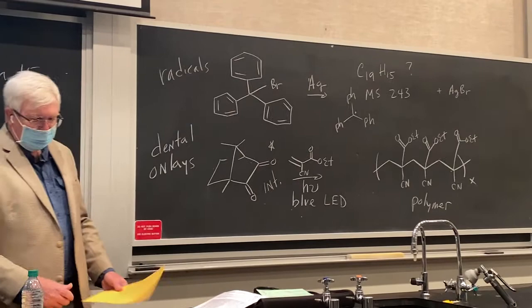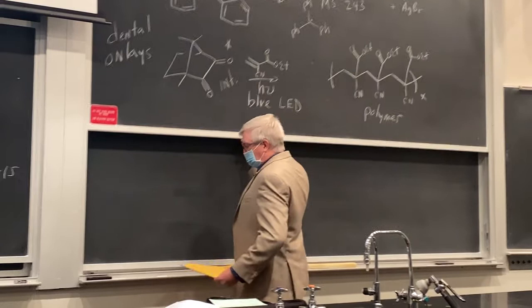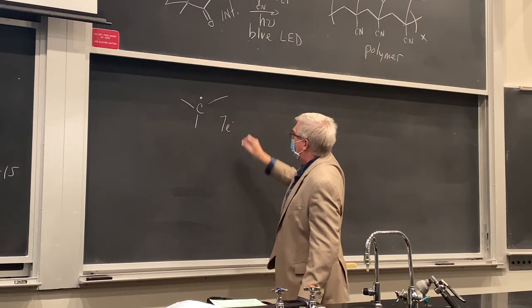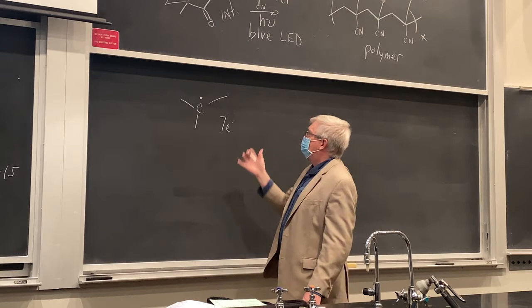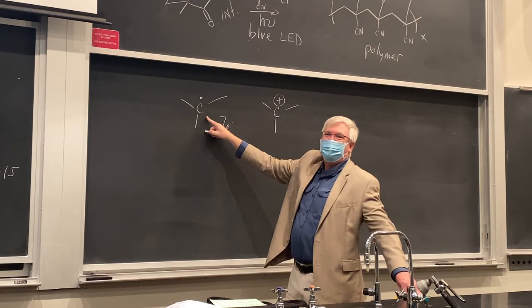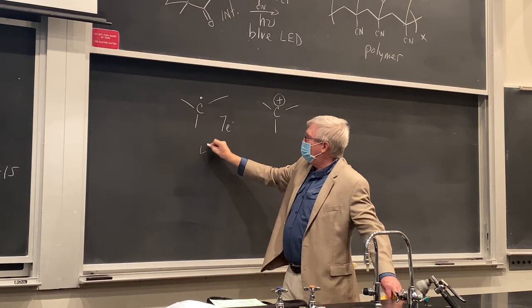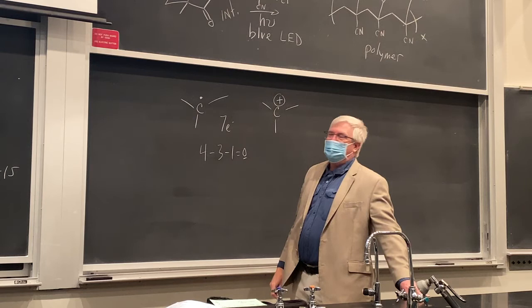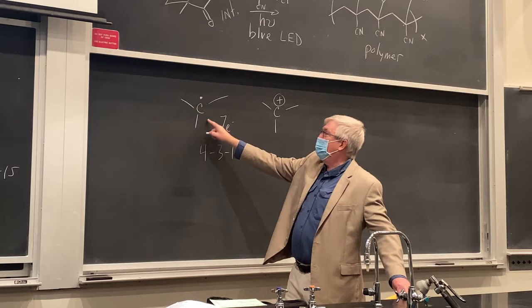Radicals are odd electron species — count up the total electrons around the radical and that's seven electrons. This violates the octet rule; we call this an open-shell species. They're relatively unstable. We've talked about carbocations before, which have six electrons and a plus charge. Notice radicals are neutral — the formal charge is zero: valence electrons minus three bonds minus one unpaired electron equals zero. But they're very reactive because of those seven electrons.